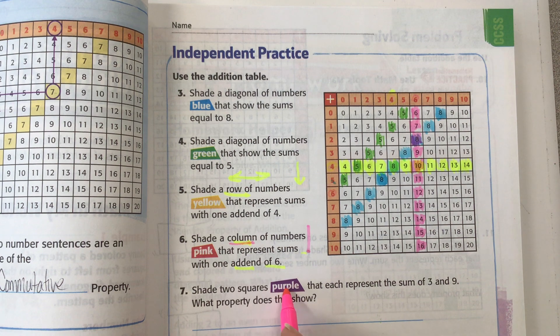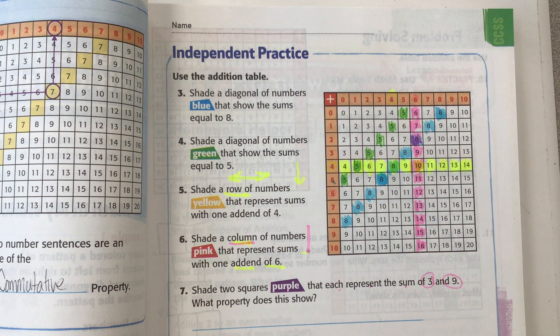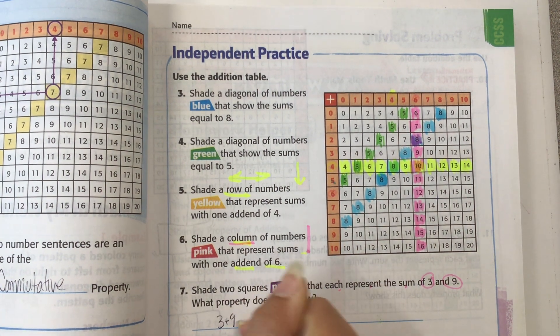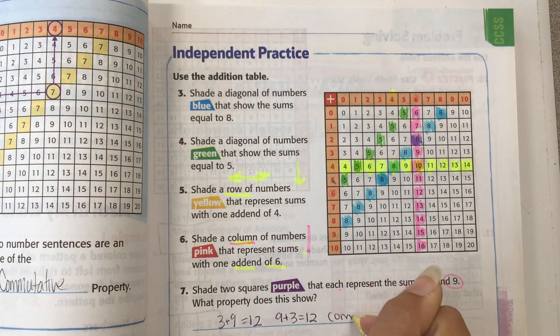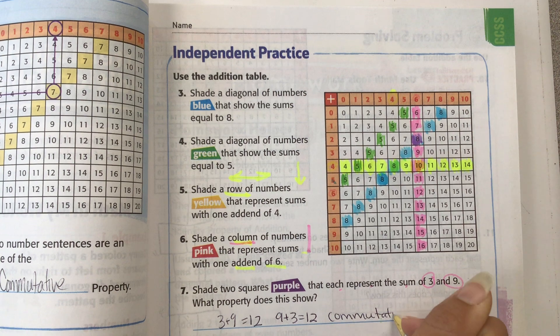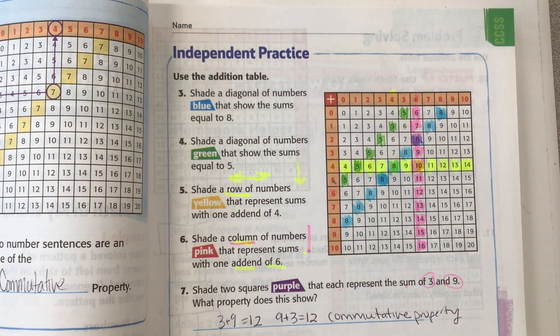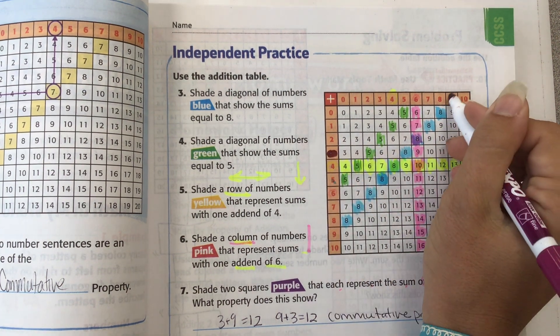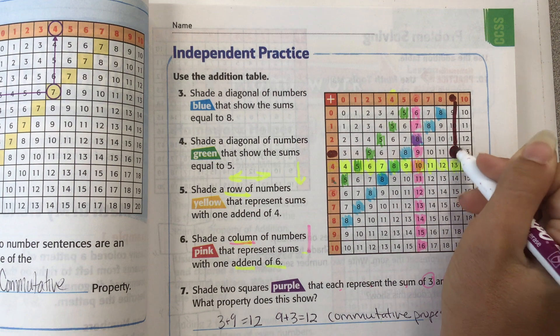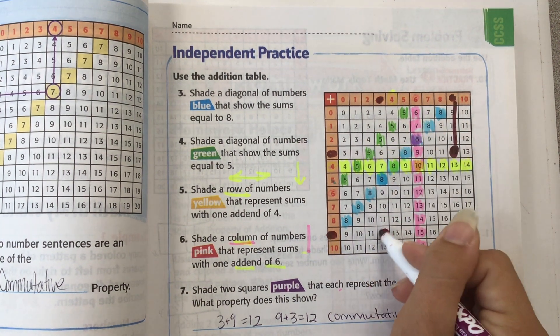Shade two squares purple that each represent the sum of three and nine. What property does this show? So the first thing is we know three plus nine equals twelve, and nine plus three equals twelve. This is called the commutative property. And let's shade those purple. Three and nine go down right here. And then here, nine and three go down. It's right here.